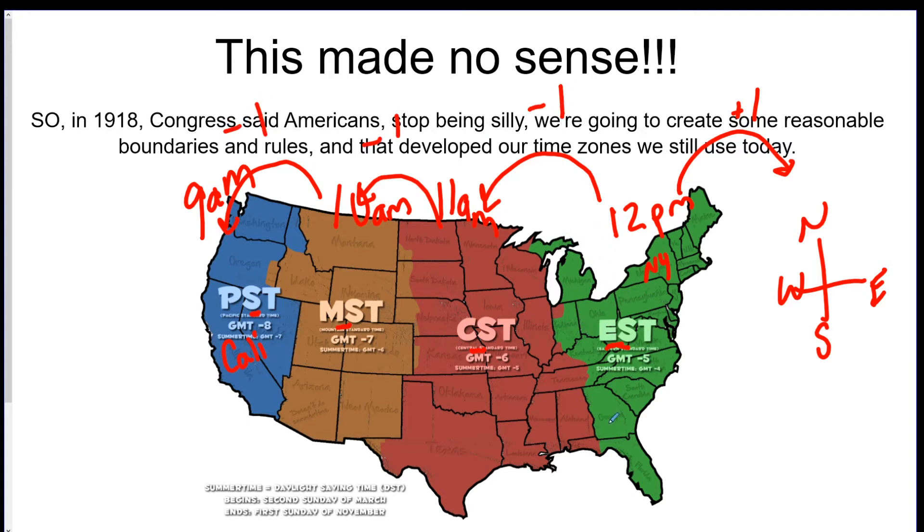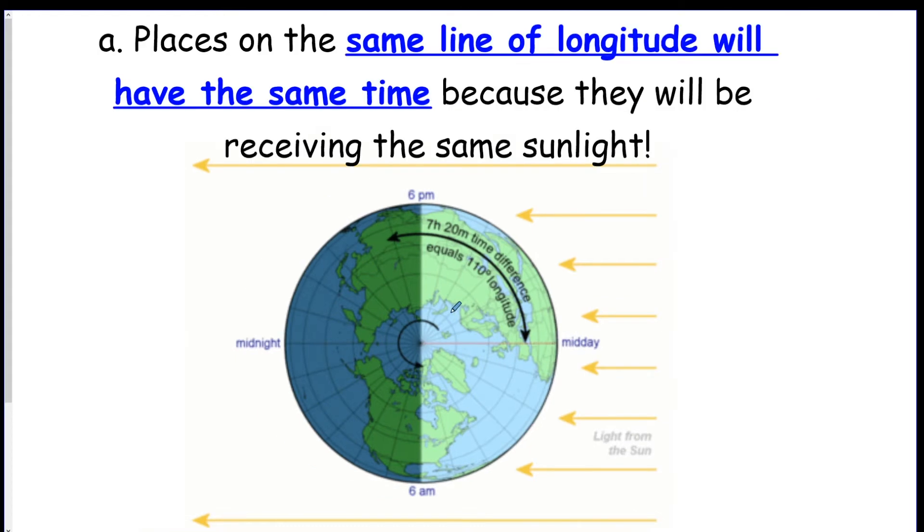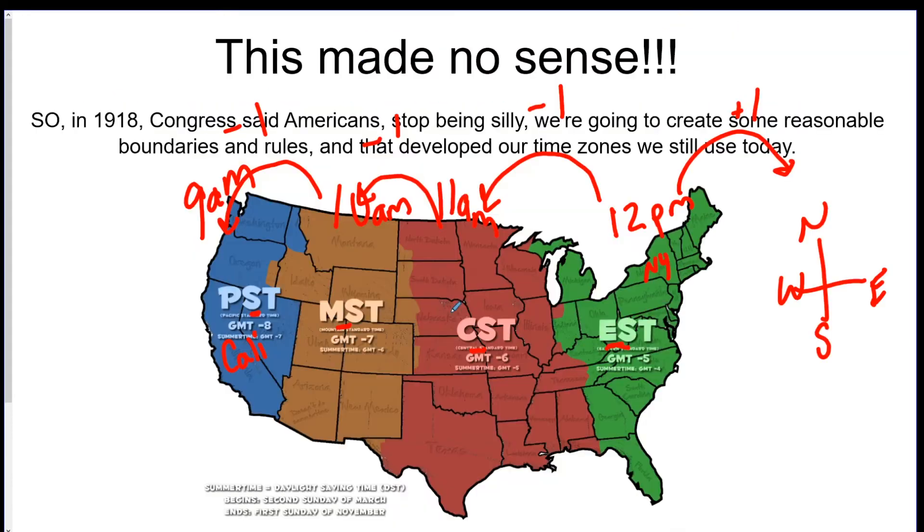Now, how did they figure out where to divide these time zones? That's what we're going to talk about today. So it's actually based on lines of longitude, which are the lines that go up and down. Every place on the same line of longitude are in the same longitudinal zone here, because the longitude lines go like this. They all have the same time.